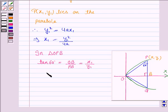Now, we know that tan 60 degrees is root 3. So, root 3 is equal to x1 upon y1 and this implies x1 is equal to root 3 y1.